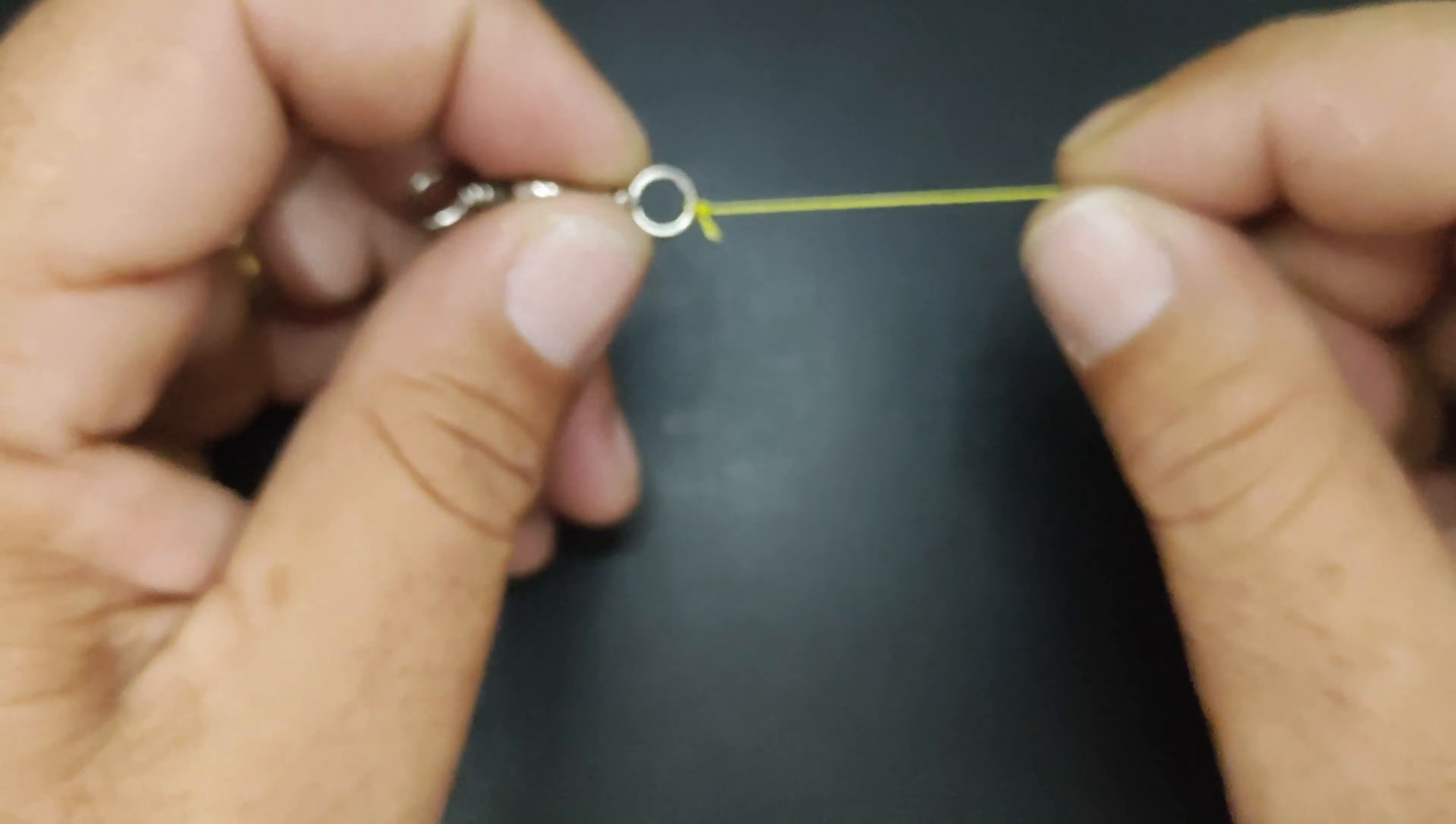Recapitulando: passa a linha por dentro do olho do seu anzol ou rotor. Aí dá seis voltas em torno do eixo. Vai sobrar uma orelhinha aqui. Passa a ponta morta dentro da orelhinha e volta ela por dentro de novo. E só estica. Hiper resistente. Não cede, não corre. Pode ser usado na linha multifilamento, mono. E muito prático pra usar aí nas suas pescarias.